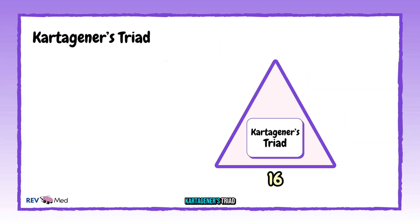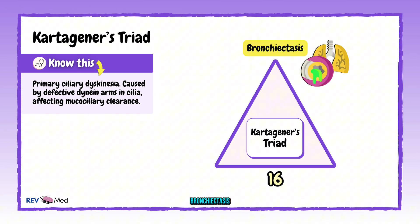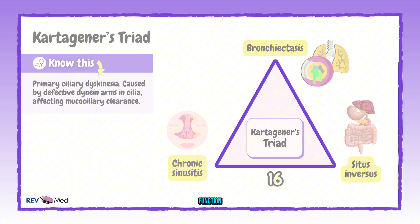Number sixteen: Kartagener's triad — primary ciliary dyskinesia. Bronchiectasis, chronic sinusitis, and situs inversus. It is caused by defective dynein arms impairing ciliary function.